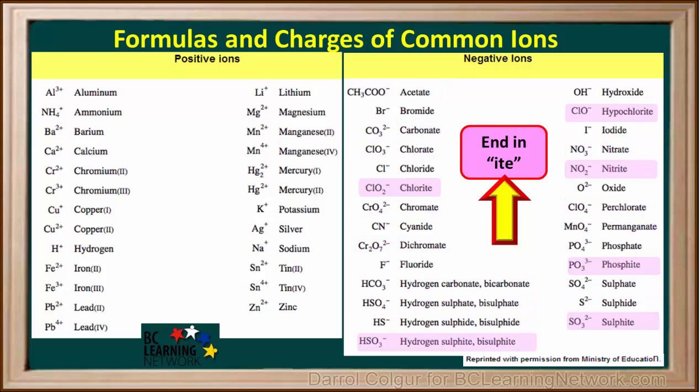A few of them end in -ite, like chlorite, hypochlorite, and nitrite. And three polyatomic ions have names ending in -ide: cyanide, bisulfide, and hydroxide.